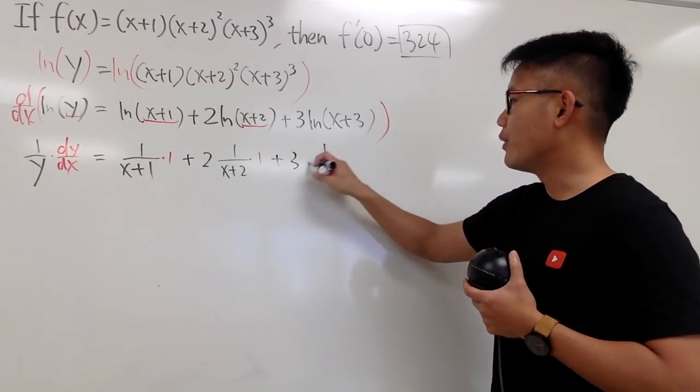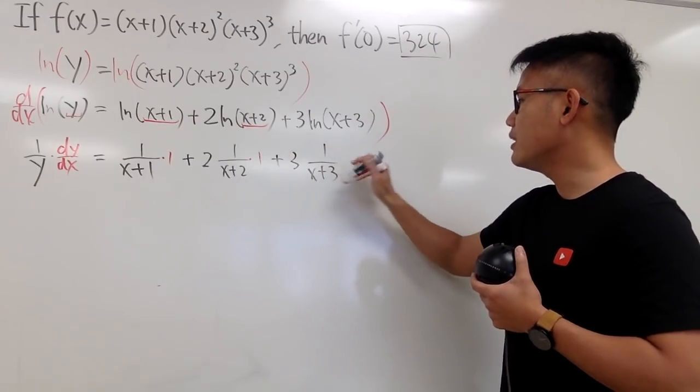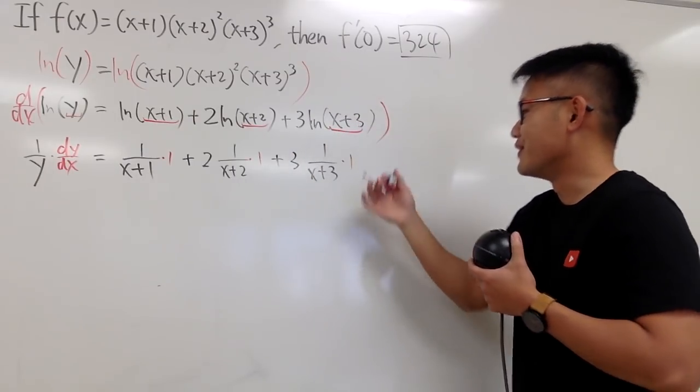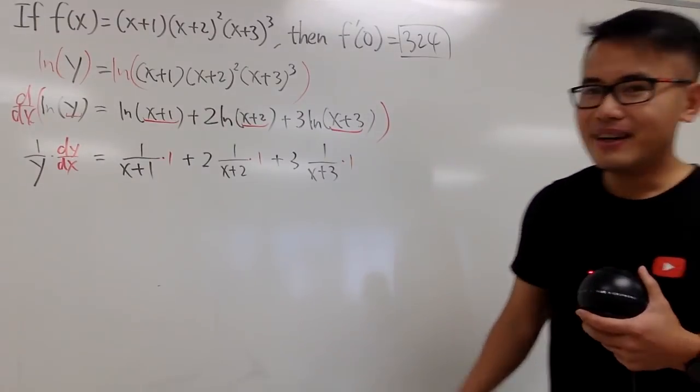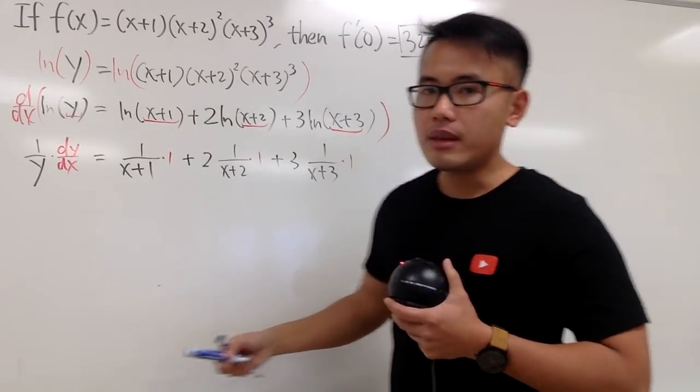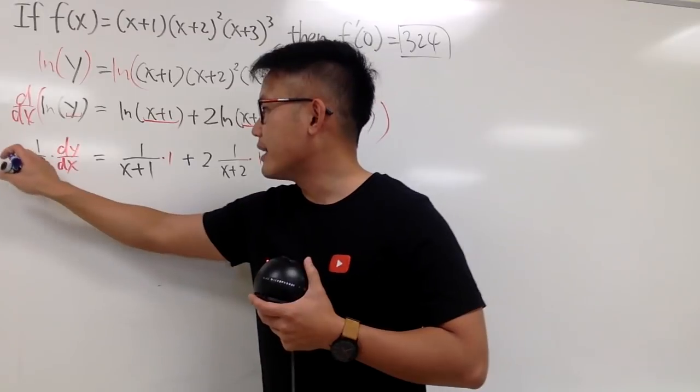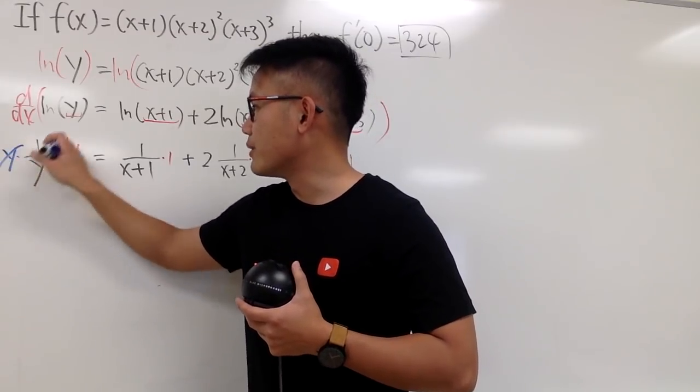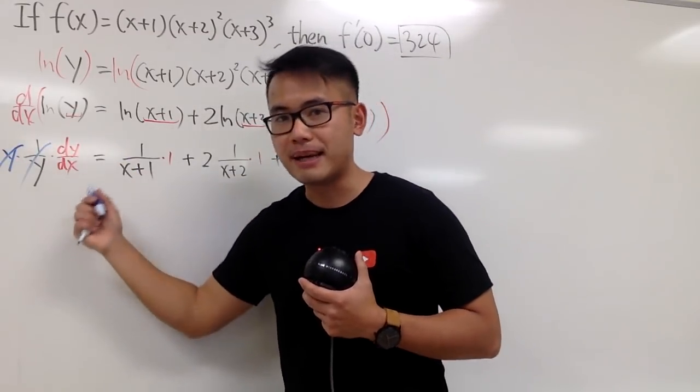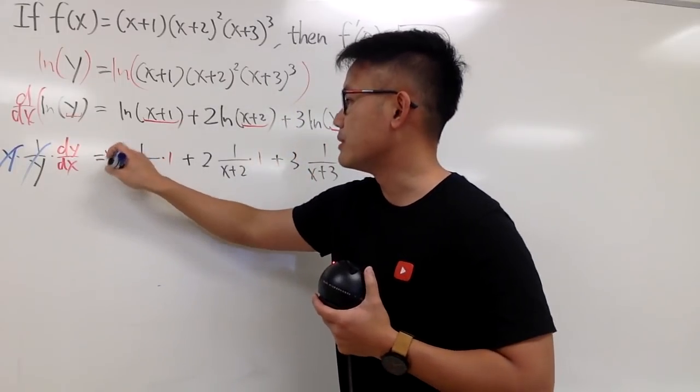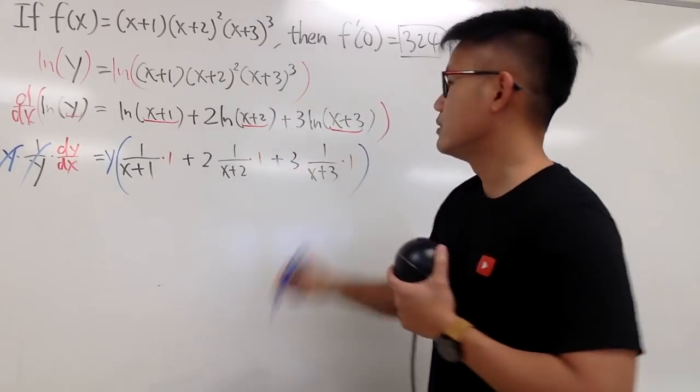And lastly, same thing. 3, 1/(x+3), times the derivative of the inside, which is still 1. Okay, now, this is 1 over y. I can just multiply both sides by y, so they can be cancelled. I can get the dy/dx this way, and we do the same thing on the right-hand side as usual.